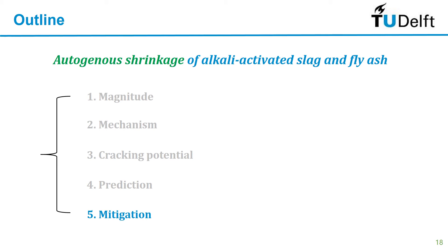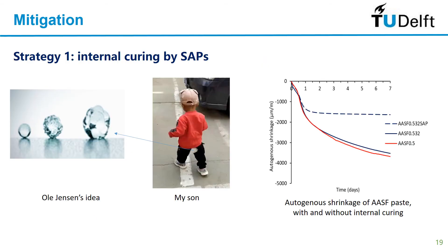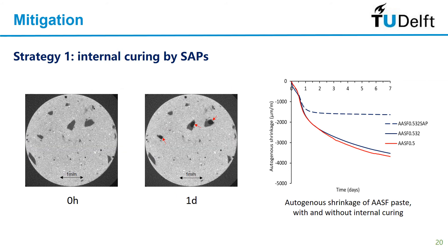I tried different methods but here I will only show two effective methods. The first one is internal curing by SAPs — super absorbent polymers can absorb a lot of liquid, expand, and the liquid inside can be used for internal curing. We found a large shrinkage-mitigating effect on our systems, especially at later age; in the very early age it doesn't work as well. Through CT scanning we can clearly observe the release of liquid from the SAP particles to the surrounding, but in the very early age the self-desiccation is not the only driving force, so however much SAP you add you cannot eliminate the shrinkage.